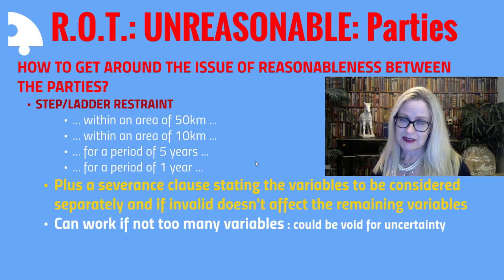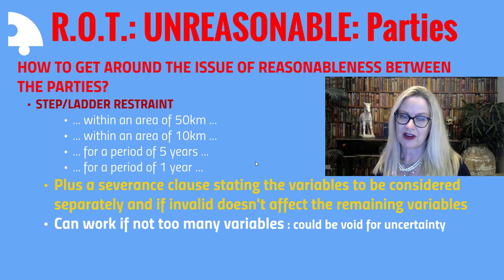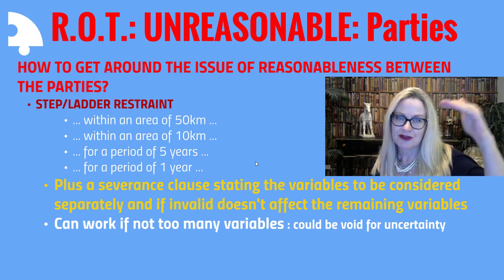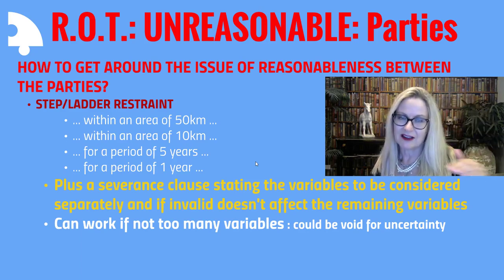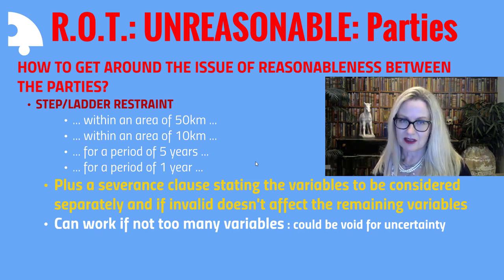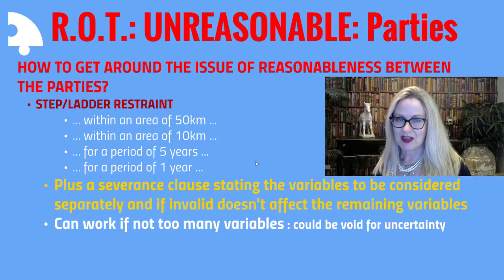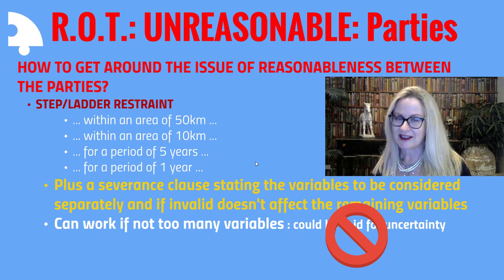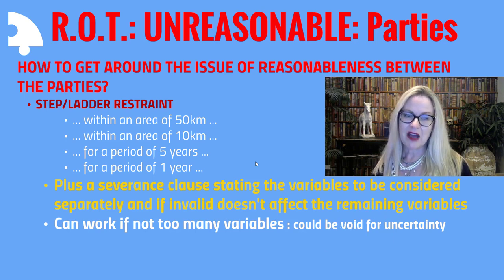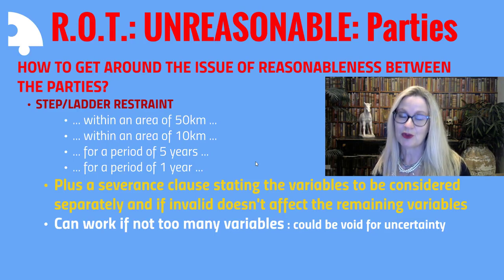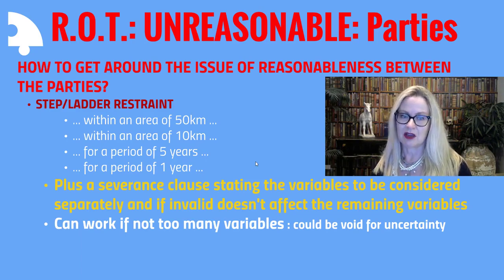That all sounds like a great idea. However, courts can get a little ticked off with these kinds of restraints where there are too many variables. So if you've gone for gold with 100 years, 99 years, 98 years, 97 years and told the court to just strike out whatever ones they think are offensive, the court will throw their hands up and say the whole restraint is void for uncertainty. So it's a bit of a winner-takes-all stakes game. But if you do it in a restrained fashion with not too many variables, it might assist your client in enforcing their restraint.